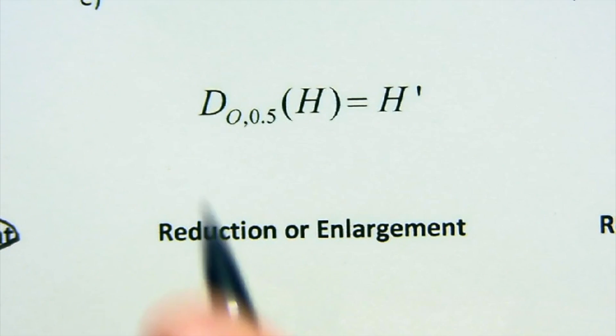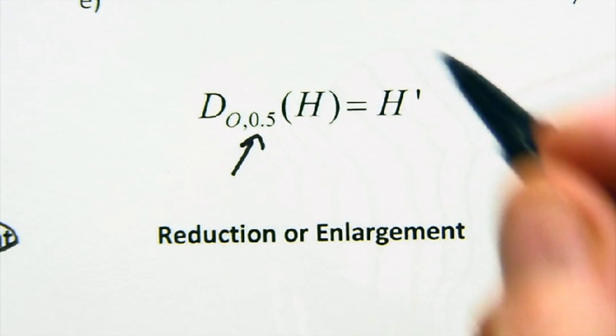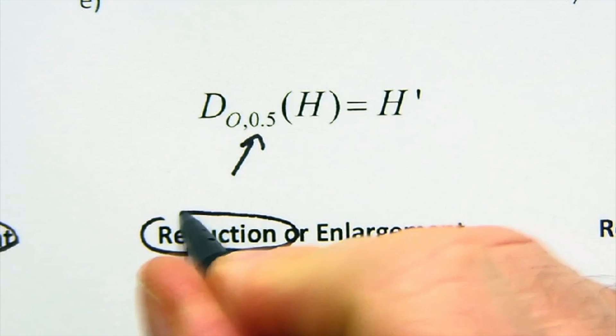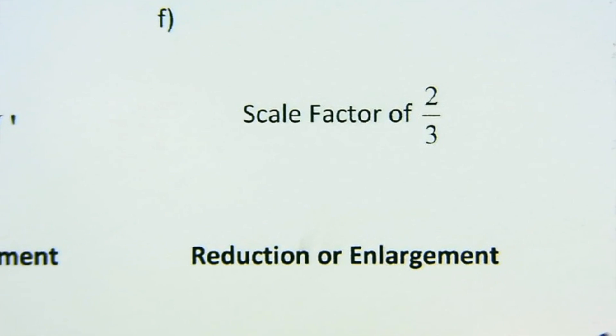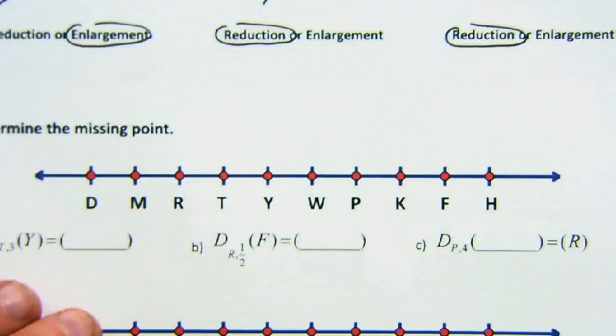Again, here, we're testing your knowledge of decimals or fraction values. This is a reduction. And then, finally, a scale factor of two-thirds. Two-thirds, if anything, is a reduction. Those are nice little things to kind of get a grip on how things work.